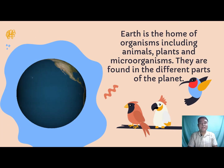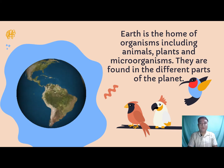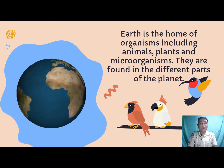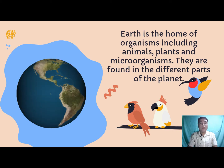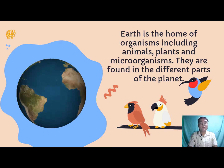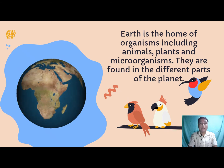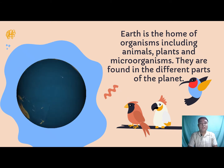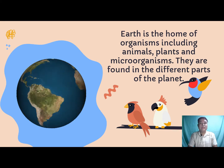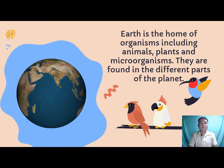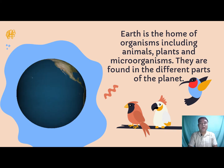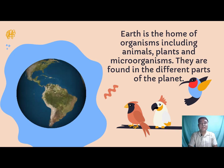Earth is the home of organisms including animals, plants, and microorganisms. They are found in the different parts of the planet. The ecosystems include living organisms which are the biotic factors like animals, plants, insects, and bacteria, as well as the non-living components which are also known as abiotic factors like rock, soil, water, and sunlight. Non-living things are classified as inanimate objects that may influence, alter, or impact the life of biotic factors.